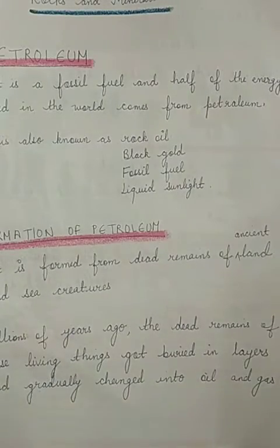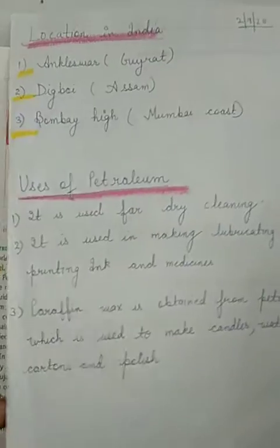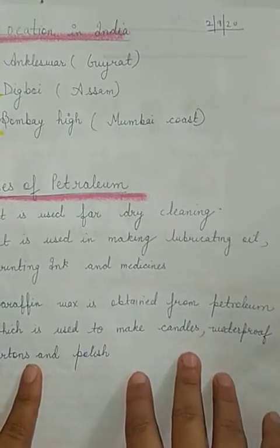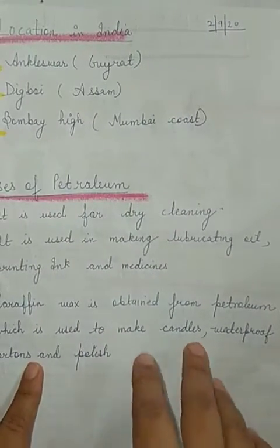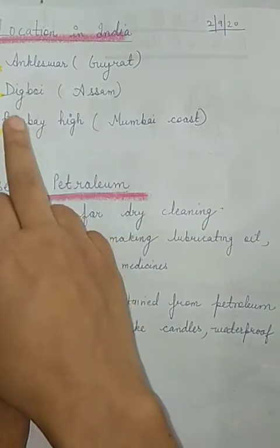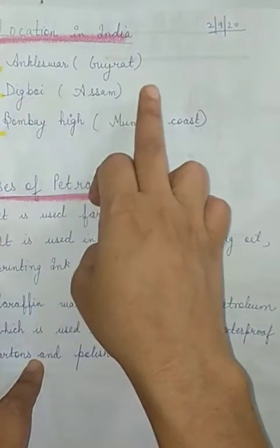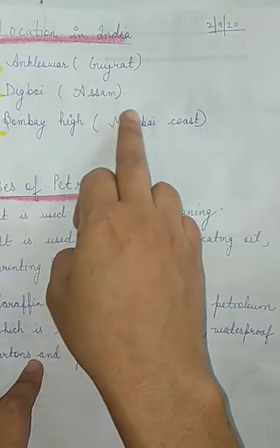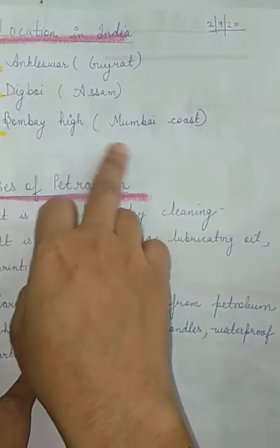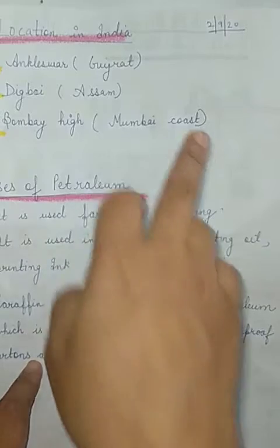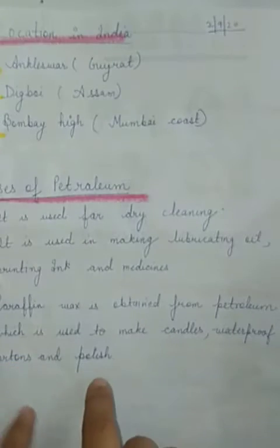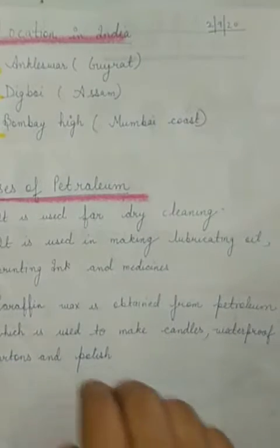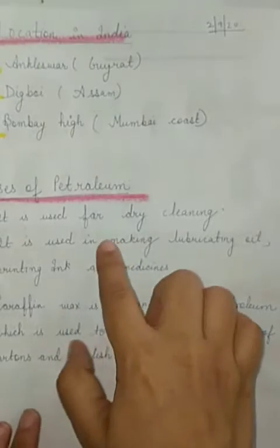You should know the locations of petroleum in India. There are three main locations: first is Ankeleshwar, which is in Gujarat; second is Digboi, which is in Assam; and third is Bombay High, which is on the Mumbai coast.